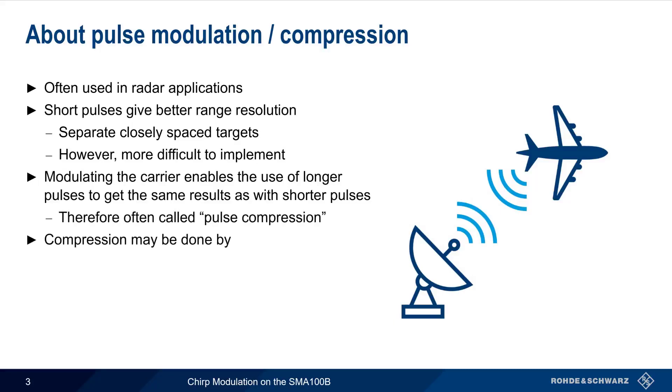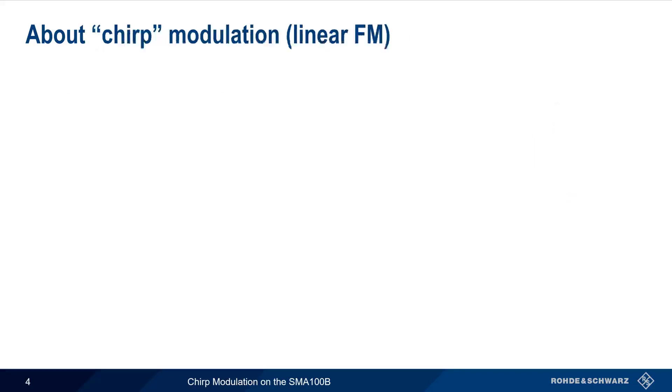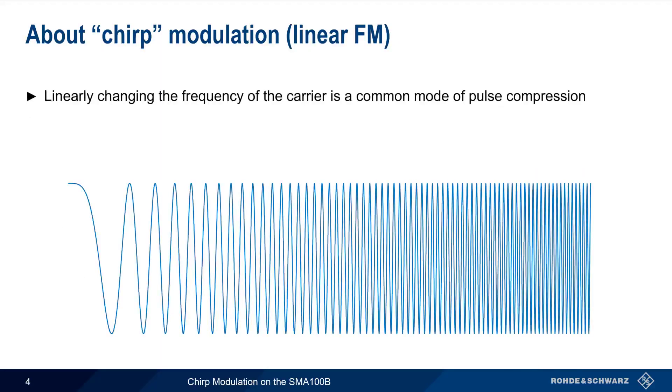There are two main ways that pulse compression is done. The first is changing the phase during the pulse, for example using so-called Barker codes. The second way is by changing the frequency of the pulse. Linearly changing the frequency of the carrier during a pulse is one of the most common modes of pulse compression. This linear frequency modulation is very often referred to as chirp, because it's similar to rapid frequency changes in the audio domain, such as the chirping of birds.